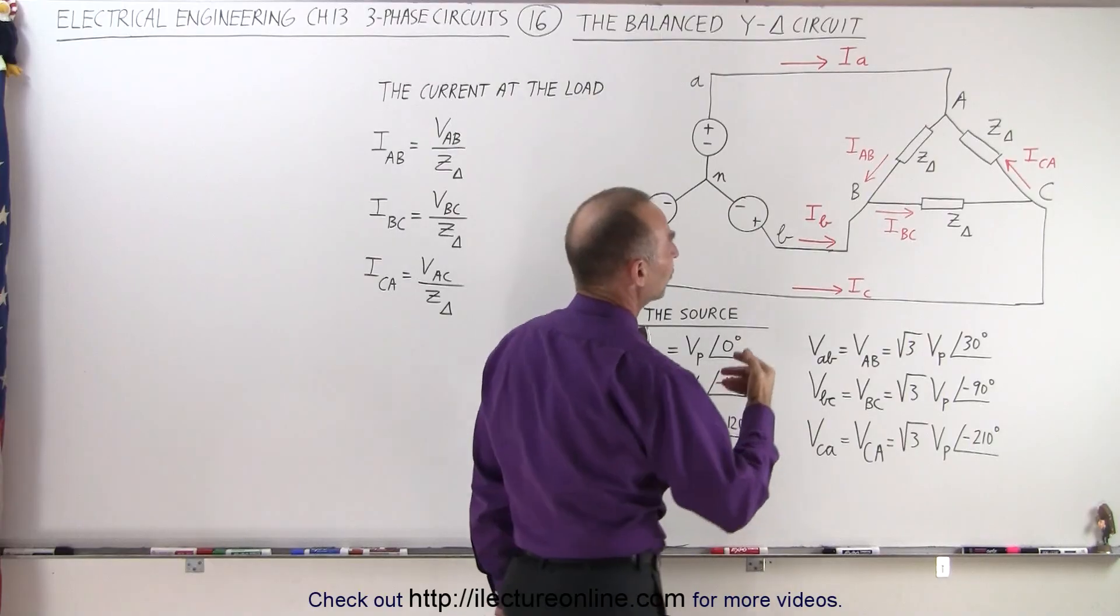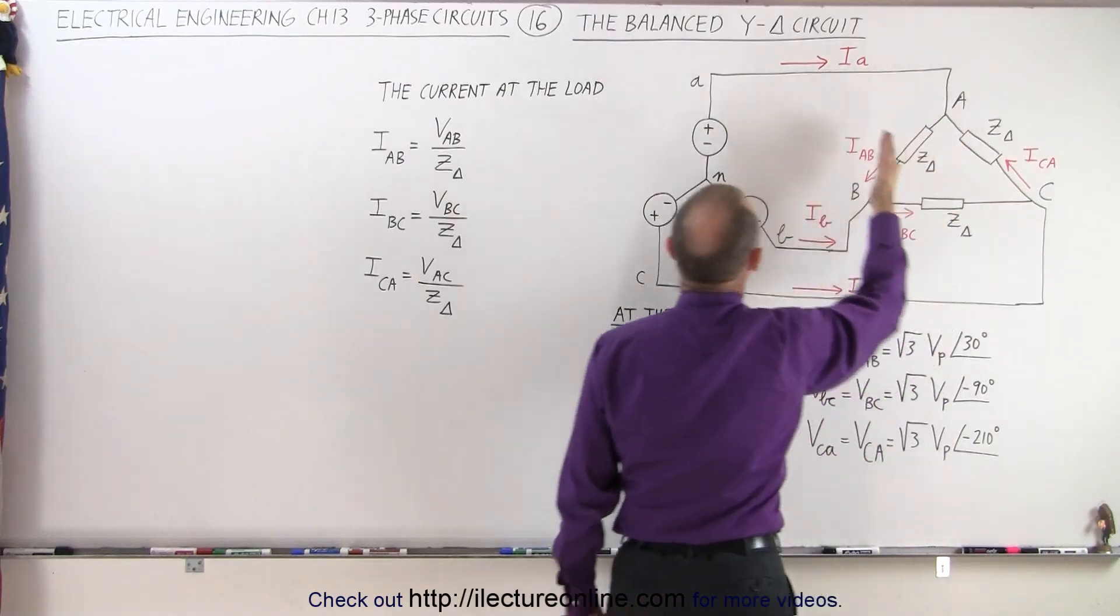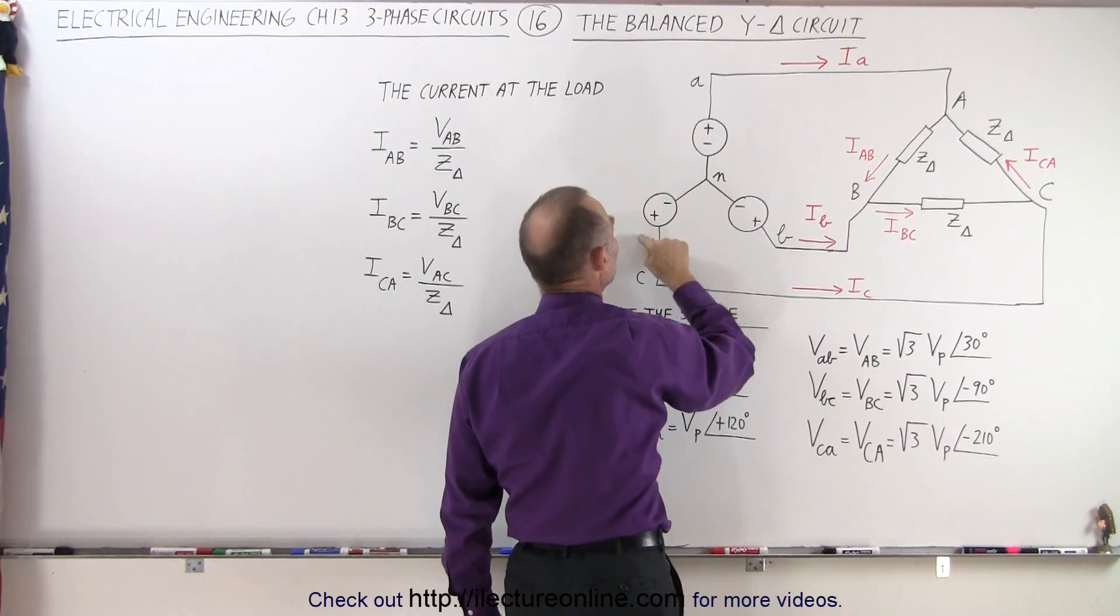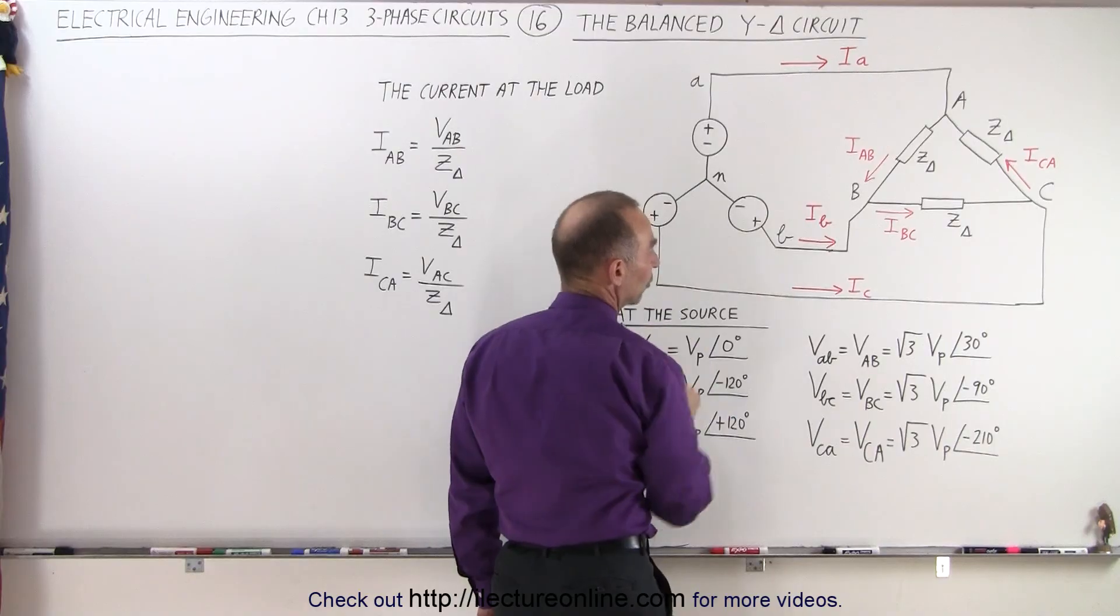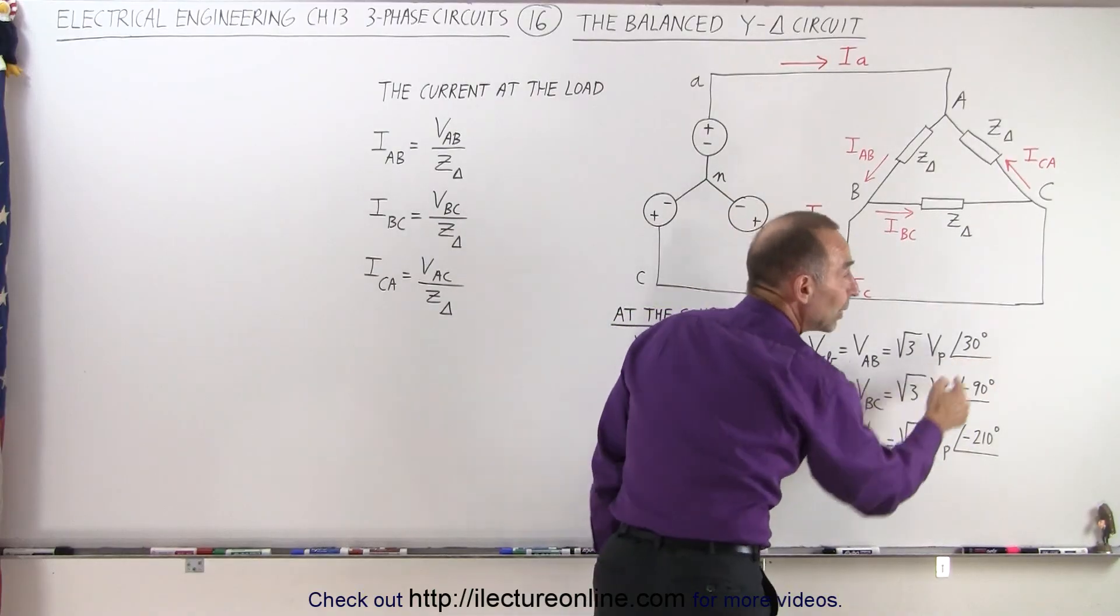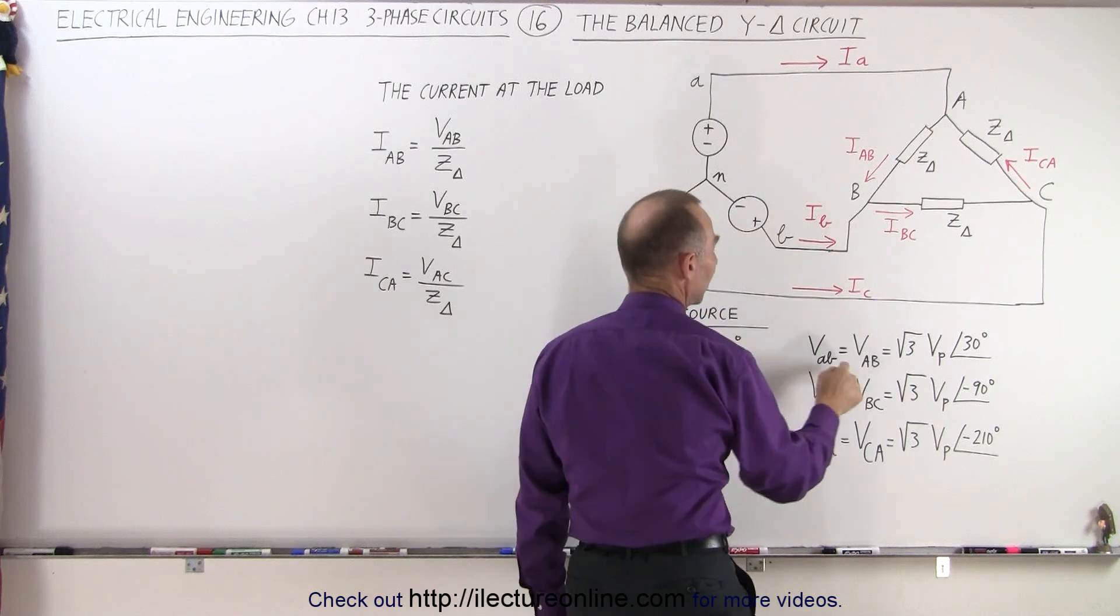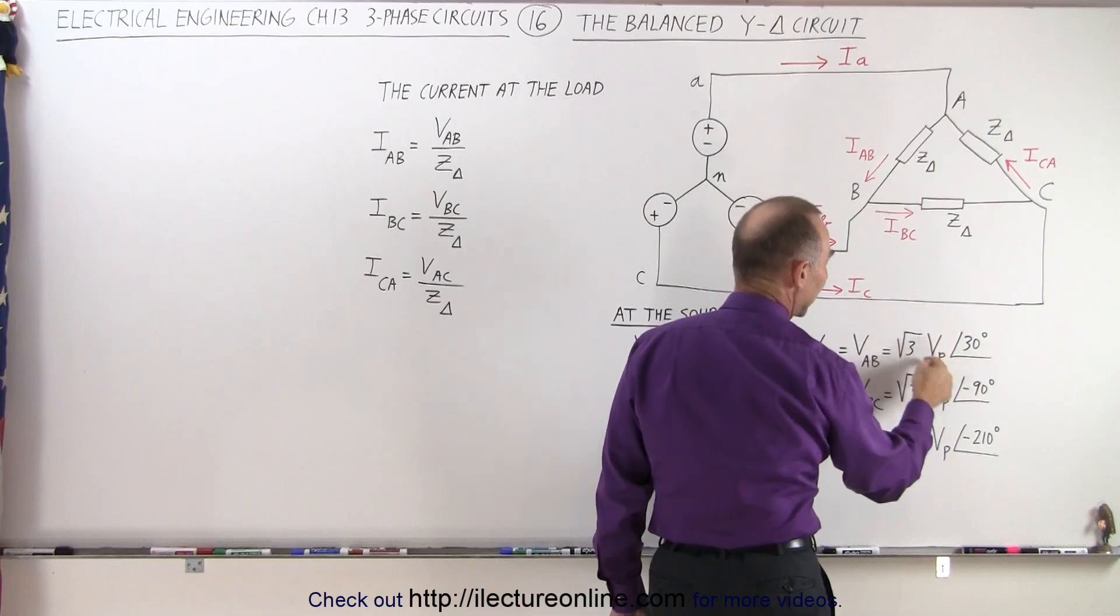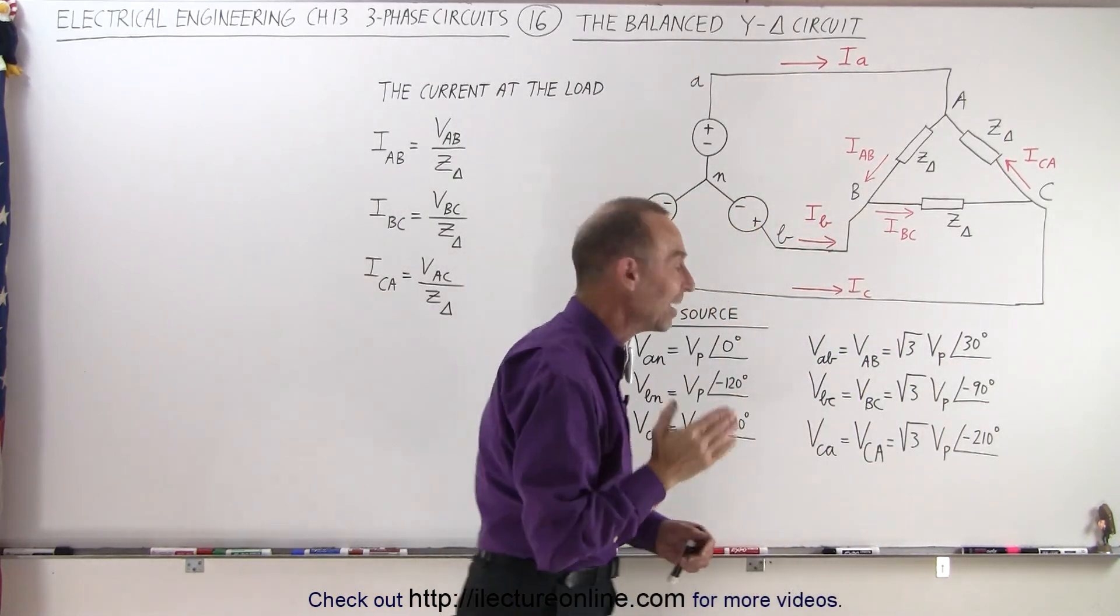If we want to express the voltages from A to B, B to C, and C to A, those are the line voltages produced by the source. The line voltage between A and B equals the square root of 3 times the phase voltage from A to N with a 30 degree lead angle. The voltage from A to B is the same as the voltage on the load from A to B, which equals √3 times the magnitude of VAN with a 30 degree phase angle lead.